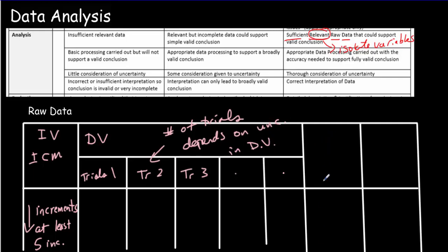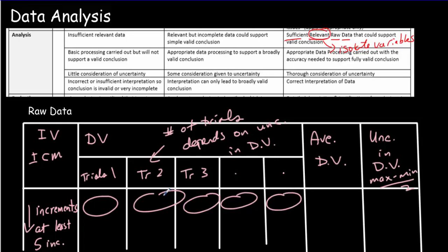Typically your next column would be your average value across trials for your dependent variable. When you're doing trials, you can use the fluctuations to estimate your uncertainty. Your uncertainty in the dependent variable would equal max minus min divided by 2. You'd look at the five values, one would be the largest, one the smallest. Subtract those two values, divide by 2, and you'll get an estimate for your uncertainty.